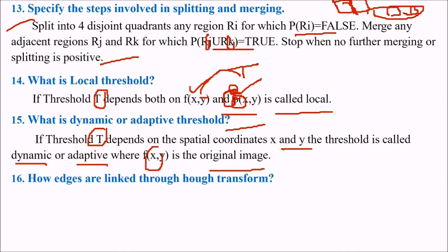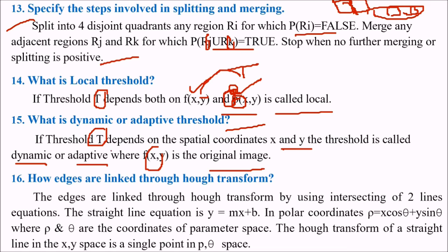How edges are linked through Hough transform? The edges are linked through Hough transform by using intersecting of two lines equation. The straight line Y equals MX plus B. This is in spatial coordinate. So we can find the polar coordinates. This line can be represented in the form of polar coordinates: rho equals X cos theta plus Y sin theta, where rho and theta are the coordinates in the parameter space. The Hough transform of a straight line in the XY space is a single point in rho theta space.